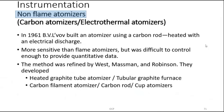In 1961 — at least 60 years back — an atomizer was built using a carbon rod heated with an electrical discharge. A rod is hollow inside and cylindrical, connected to an electrical circuit. When electricity passes through the carbon rod, due to the rod's own resistance it gets heated. This was more sensitive than flame atomizers.